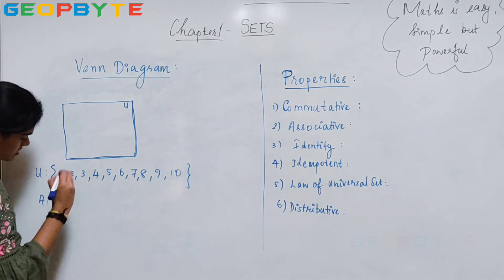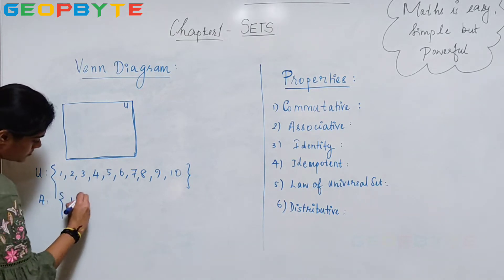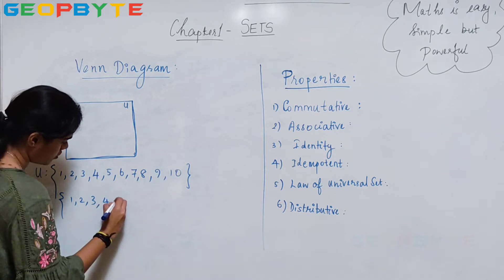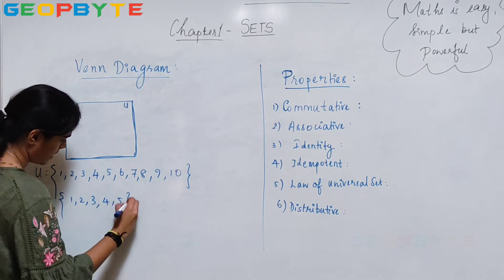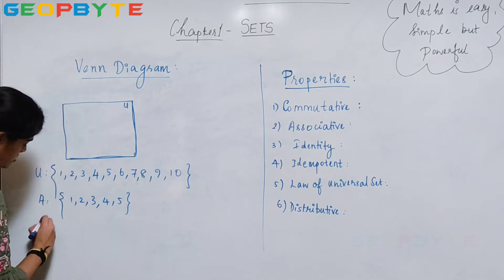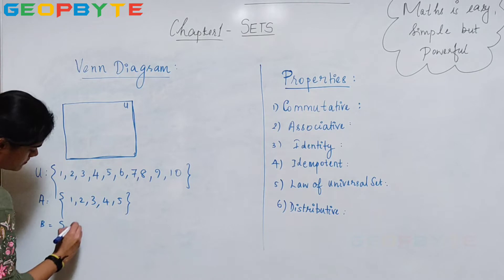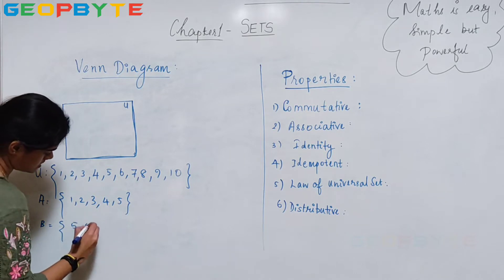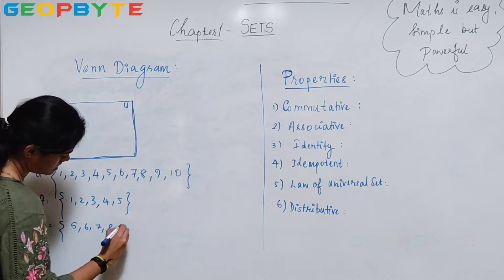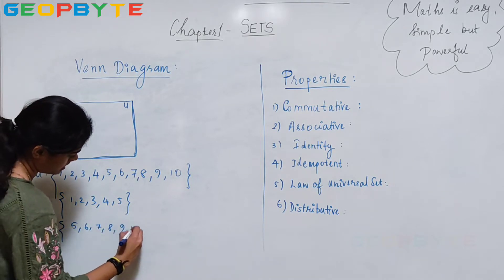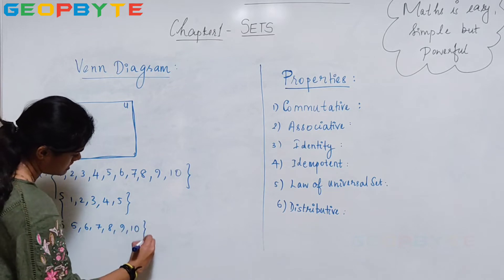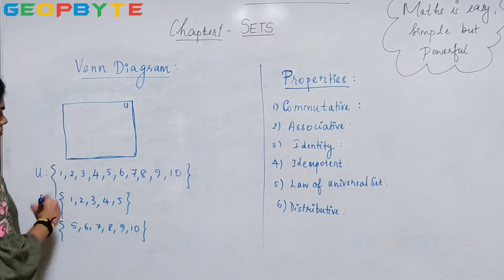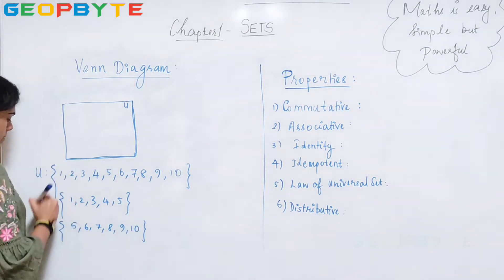I will write one of the subsets. Subset A is 1, 2, 3, 4, 5 and subset B is 5, 6, 7, 8, 9, 10. Then how will I represent my subset?